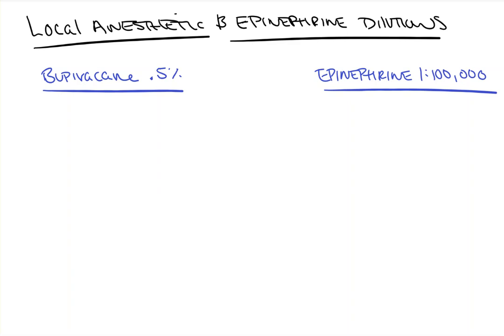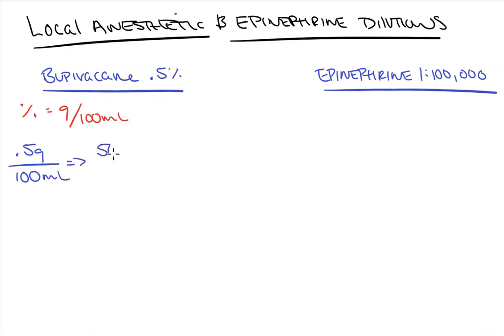Let's look at bupivacaine 0.5%. Percent means grams per 100 milliliters. So bupivacaine 0.5% is 0.5 grams per 100 ml, which translates to 500 milligrams per 100 ml — moving the decimal point 3 places to the right — which then simplifies to 5 milligrams per 1 ml when you cancel the zeros.